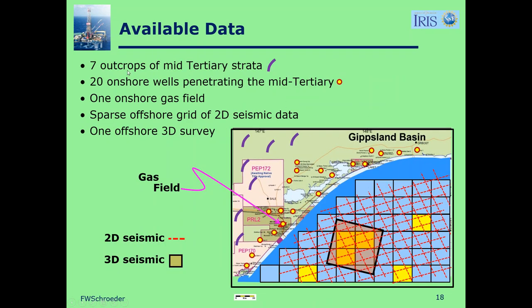For the available data, we have seven outcrops of mid-Tertiary strata — the strata we're most interested in for source, reservoir, and seal. We have 20 onshore wells that penetrate the mid-Tertiary, and one onshore gas field shown with red indicating gas. We have a sparse 2D grid shown as dashed red lines, and then within a brownish rectangle, a 3D seismic data set.